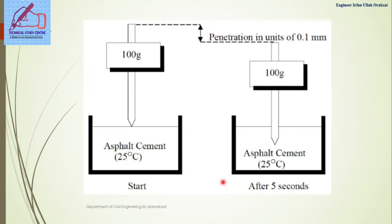As illustrated, under the known weight of 100 g, the needle is allowed to penetrate into the asphalt cement at a temperature of 25 degrees Celsius. After 5 seconds, the depth the needle has penetrated into the asphalt cement is recorded, and the penetration is measured in units of 0.1 mm.